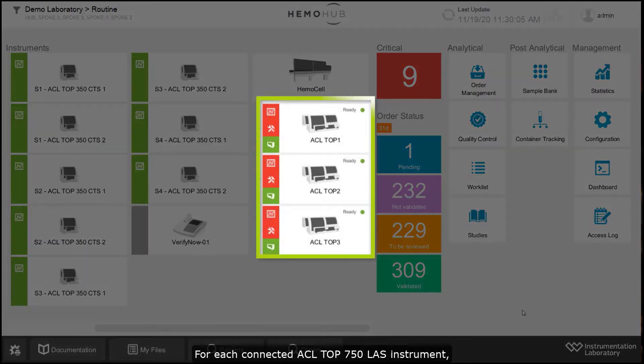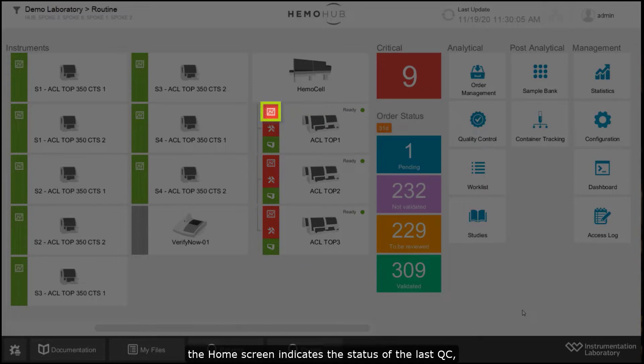For each connected ACL Top 750 LAS instrument, the home screen indicates the status of the last QC, maintenance, and test feasibility.